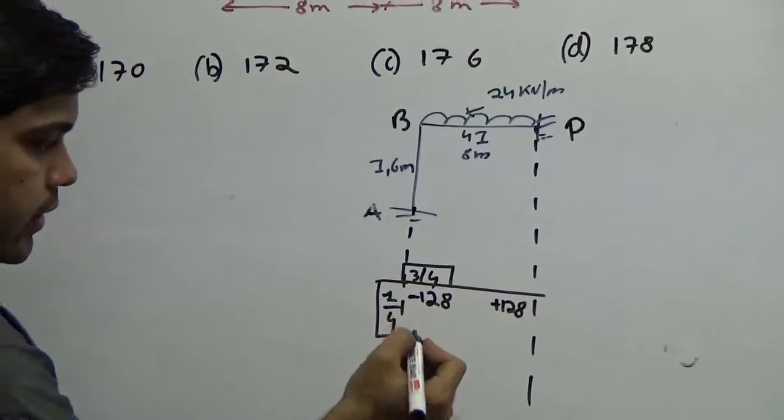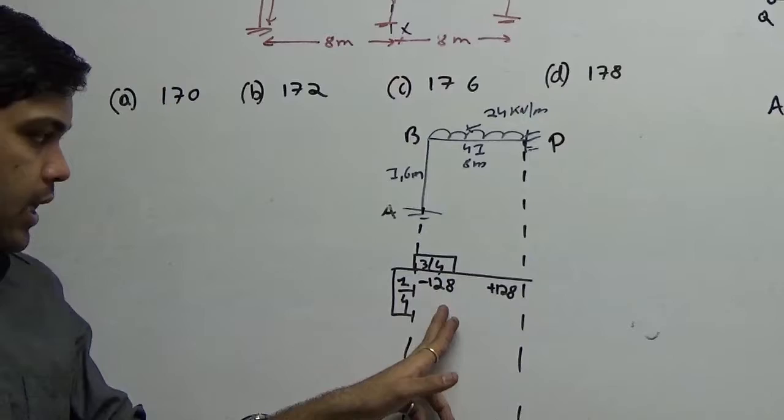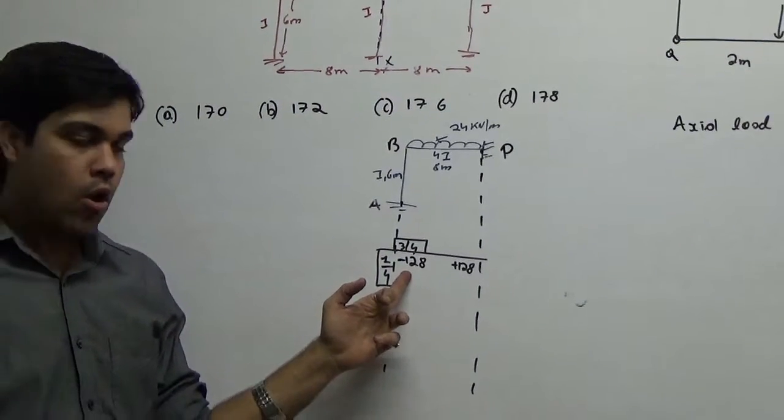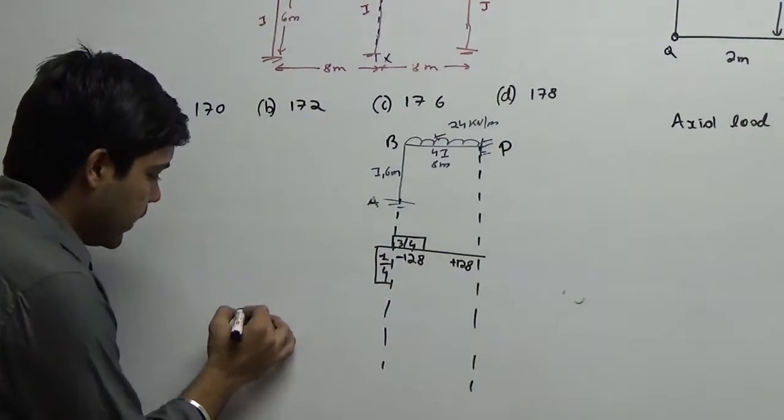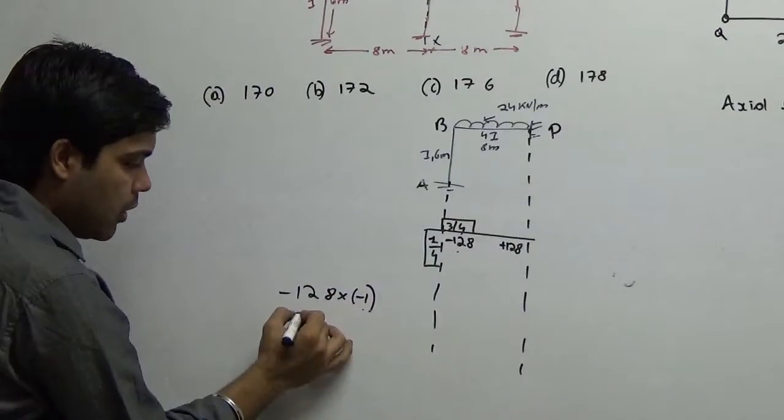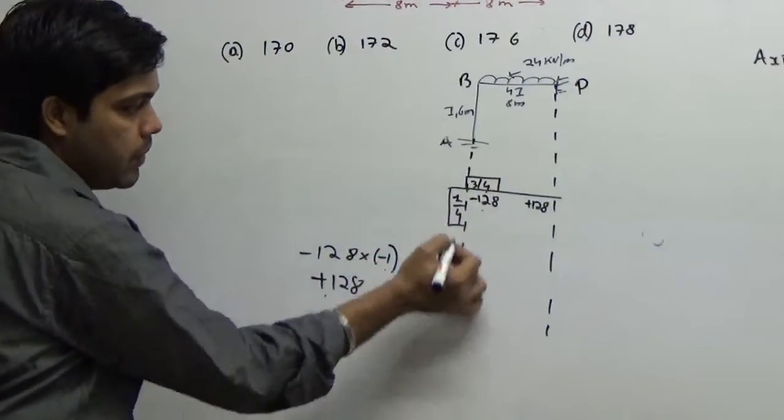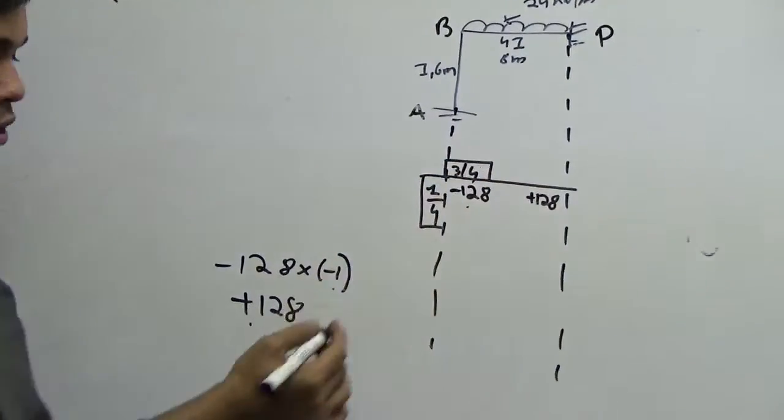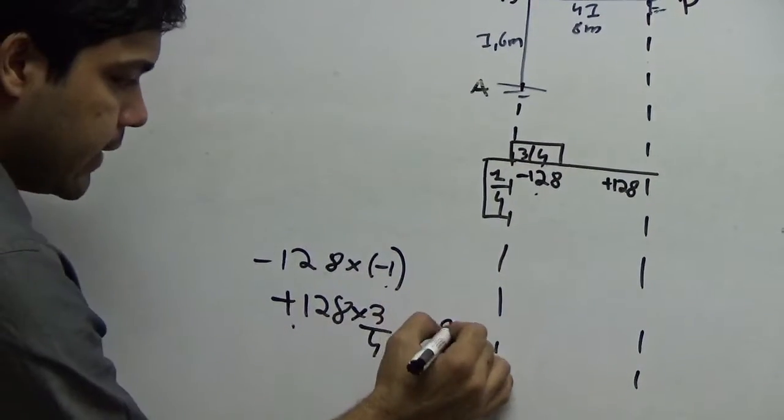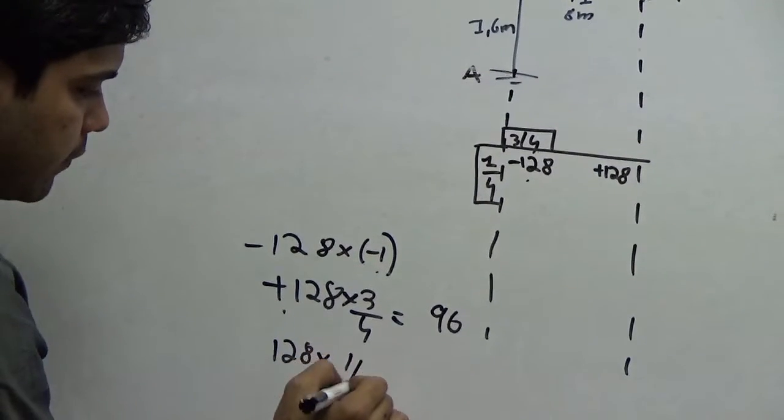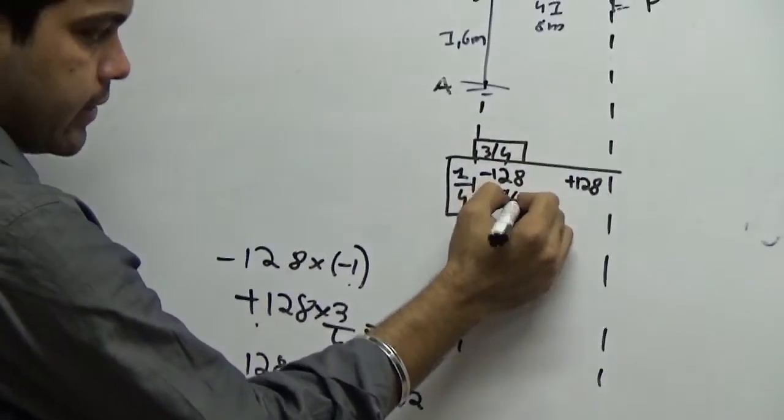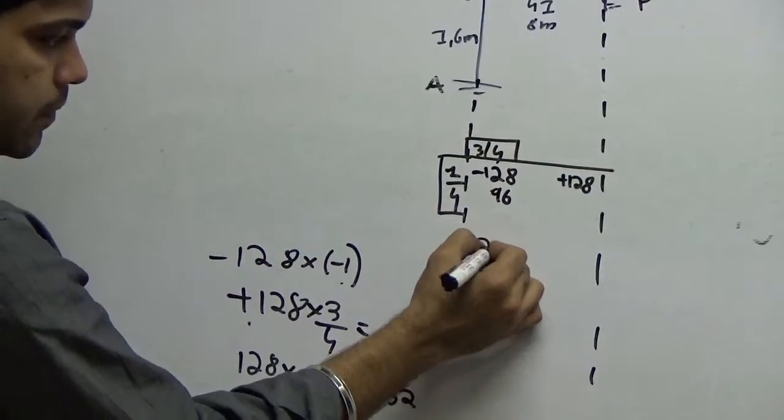Now if you see this, what do we do in moment distribution? Very carefully look at this point. At minus 128, you have an unbalanced moment acting at this joint. What do you do with this? You take minus 128, you multiply it by a minus sign. Why? Because you want to balance this. So you got plus 128. Now this 128 will be shared to this column and this beam based on the distribution factor. So you first multiply it by 3 by 4 that gives you 96 and then you multiply 128 by 1 by 4 that gives you 32.